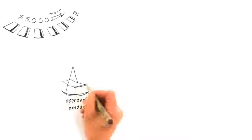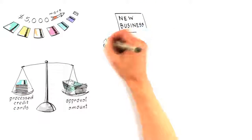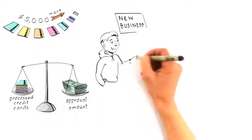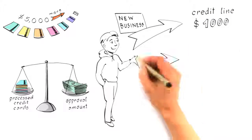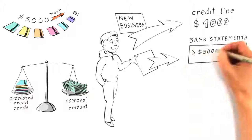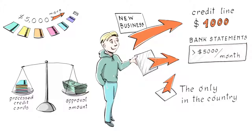To be approved, you should be processing $5,000 or more in credit cards now. Your actual approval amount will be based on the volume of credit cards you process now. A new business can also qualify for a new Merchant Account and a $1,000 credit line if they can provide bank statements that show revenue exceeding $5,000 per month. This is one of the only Merchant Credit Line programs in the country that works for brand-new businesses.